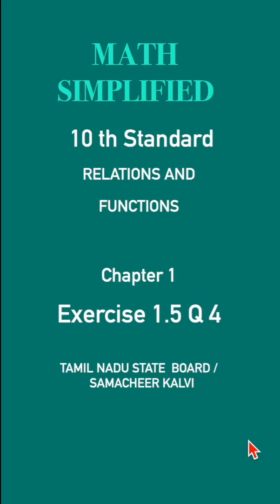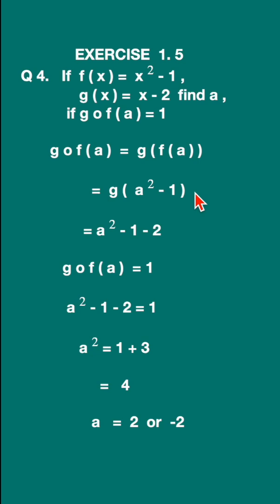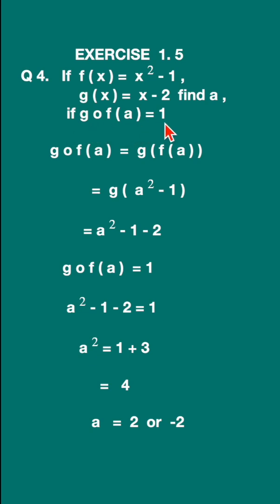Exercise 1.5, question 4. If f(x) is equal to x squared minus 1 and g(x) is equal to x minus 2, find 'a' if g(f(a)) is equal to 1.